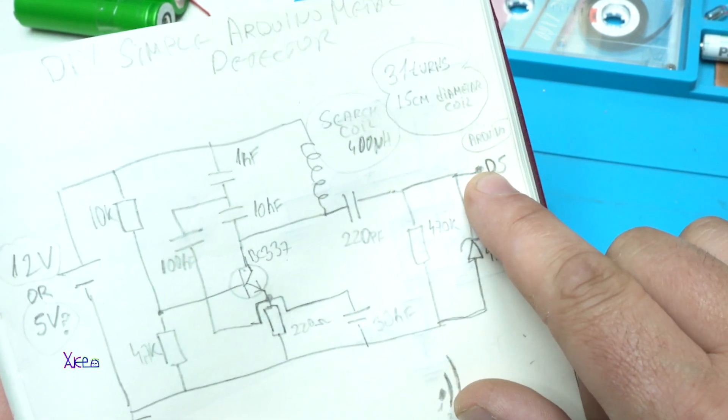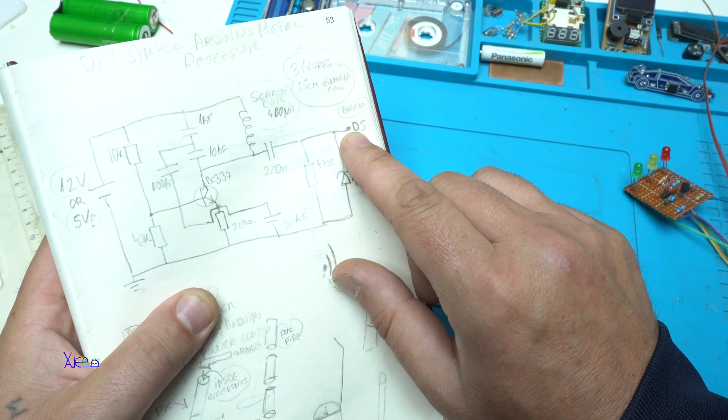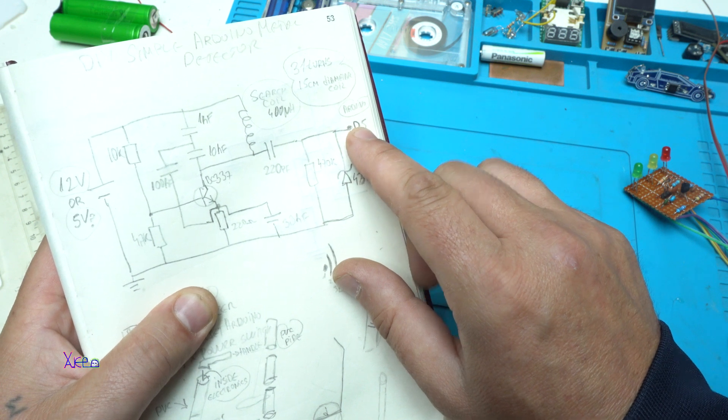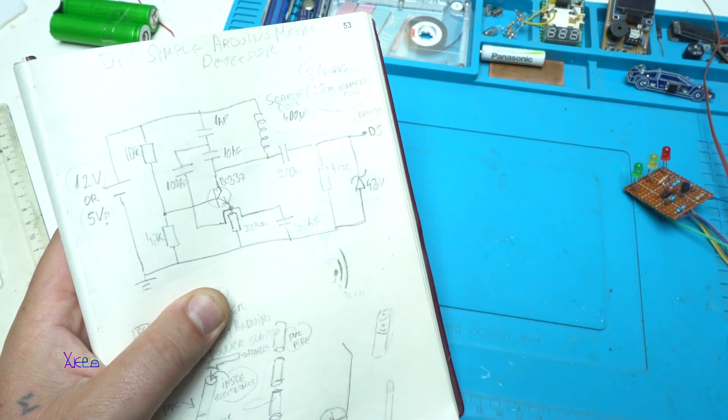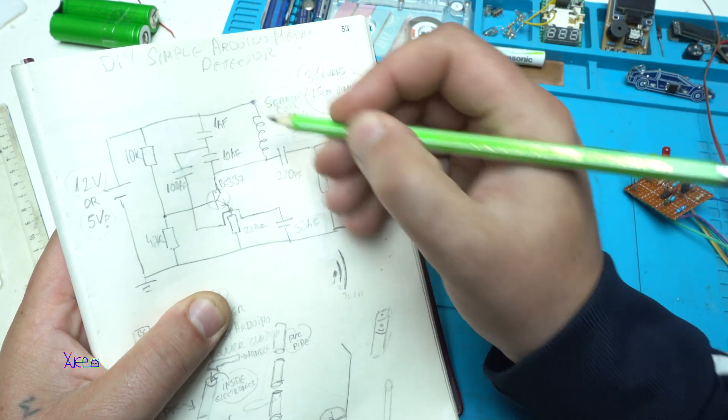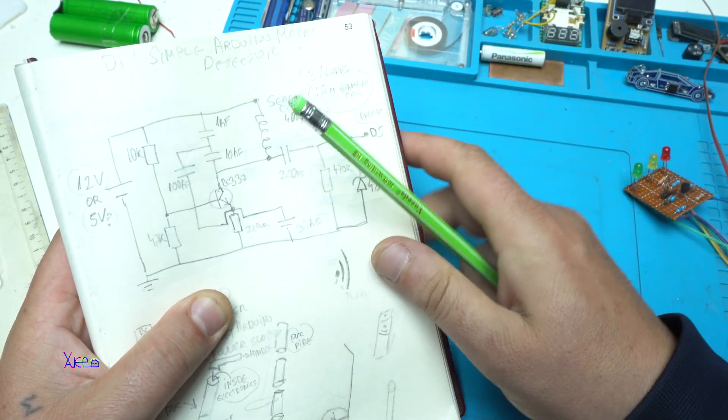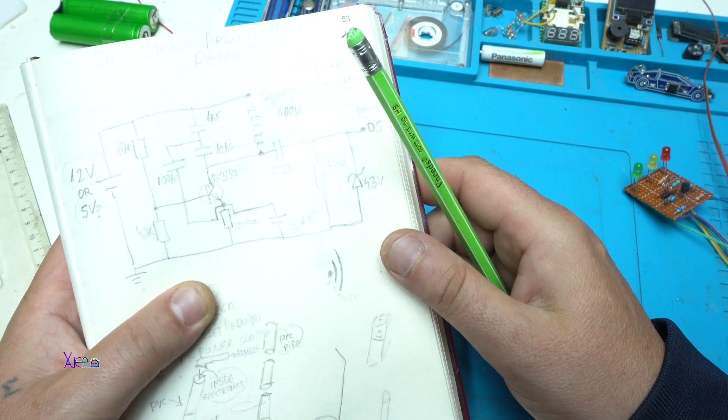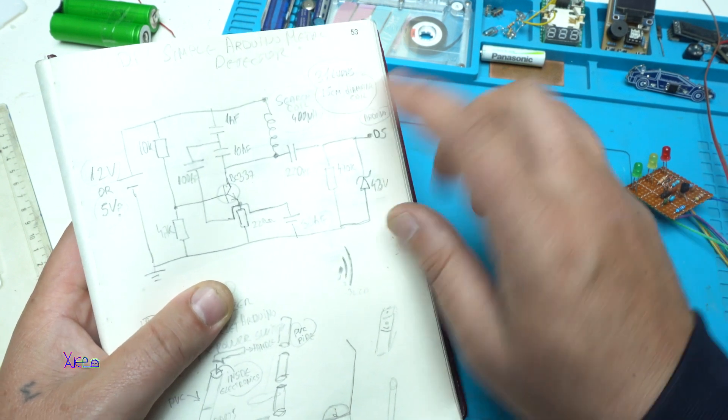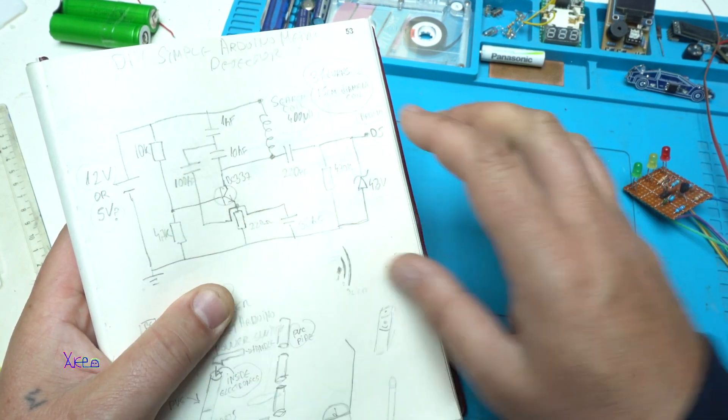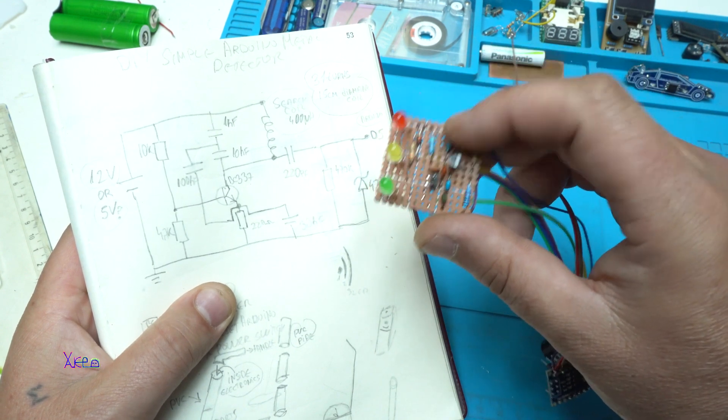This is the output of the oscillator. It goes on digital pin number 5 of the Arduino. And here is the searching coil on these spots. Here and here you're gonna attach the coil that we made before. And this is the circuit.